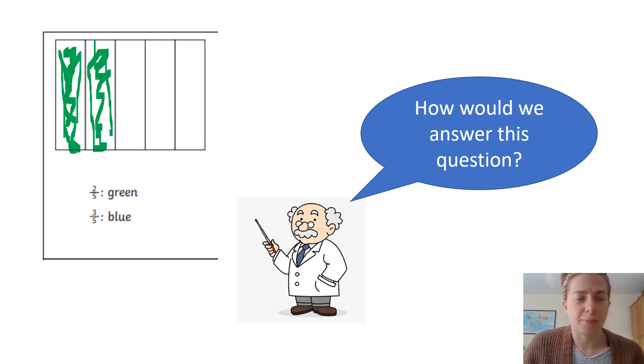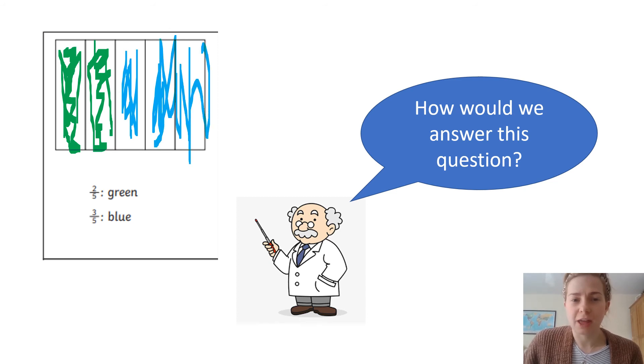Obviously, colour in a lot neater than my colouring, and then three-fifths blue, so I need to colour in one, two, three, blue. It's not my best colouring, but I've coloured in two-fifths green and three-fifths blue, so in total, I've coloured in all five-fifths.